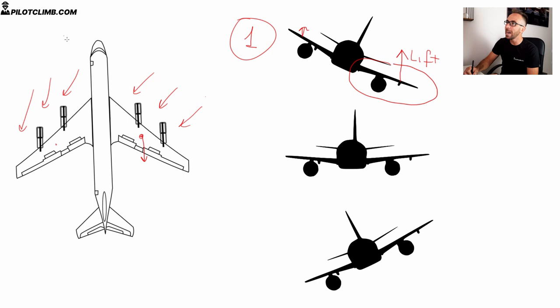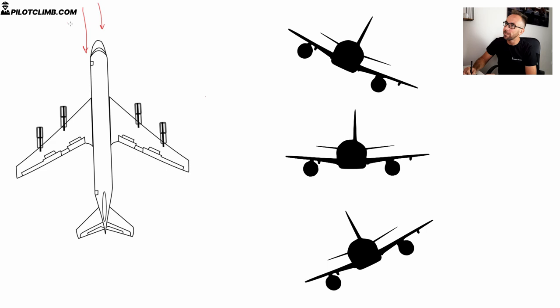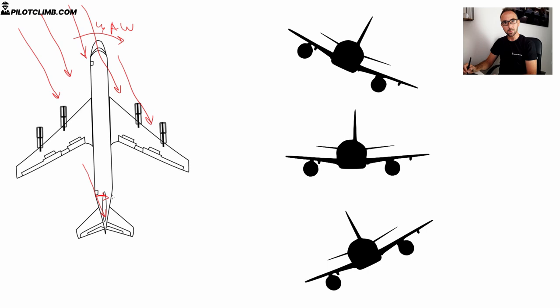By creating a yaw to the right, it is very important to understand what happens: if this is the relative airflow in straight level flight and you yaw to the right, the nose goes to the right, and the relative airflow will come from that direction — hitting your rudder and creating an angle of attack. By creating this angle of attack, you produce lift on the rudder. This lift will make the tail of the plane go to the right, thus the nose goes back to the left, correcting this yaw to the right.